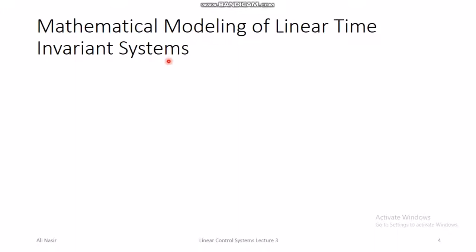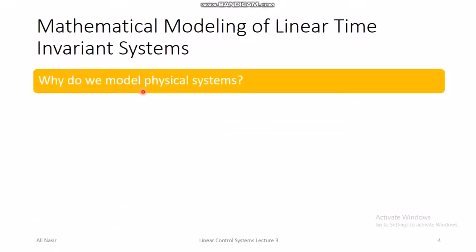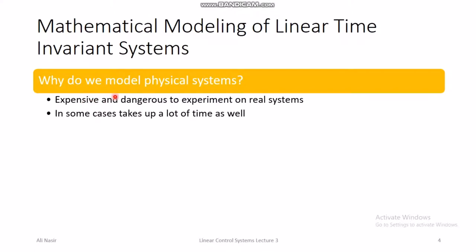Why do we model physical systems? There are two options. You could work directly on the physical system — for example, if developing a control system for an aeroplane, you run experiments on the actual aeroplane, fail in some, crash a few, waste money and potentially endanger lives. The other option is to develop a mathematical model of the aeroplane that gives you its behavior in terms of variable values, then design the controller based on that model — avoiding unnecessary expense, danger, and risk.